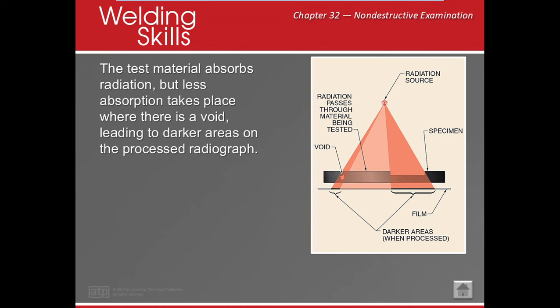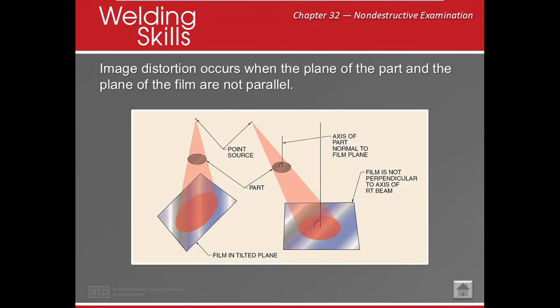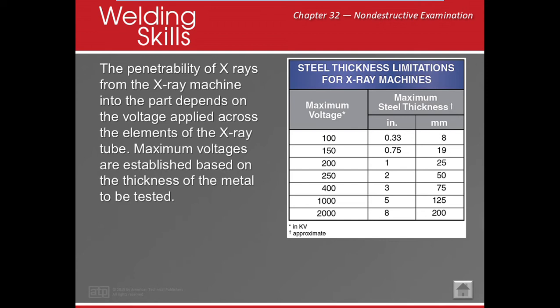Radiographic testing is my favorite. A film is placed behind the material — for example, a piece of pipe — and a radiation source, either gamma rays or x-rays, is directed at it. When the source is activated, the material blocks some radiation, and the areas that are not blocked leave a lighter area on the film, just like an x-ray of bones — showing density differences. It's also important that the technician stays parallel with the weld to avoid distortion in the image.